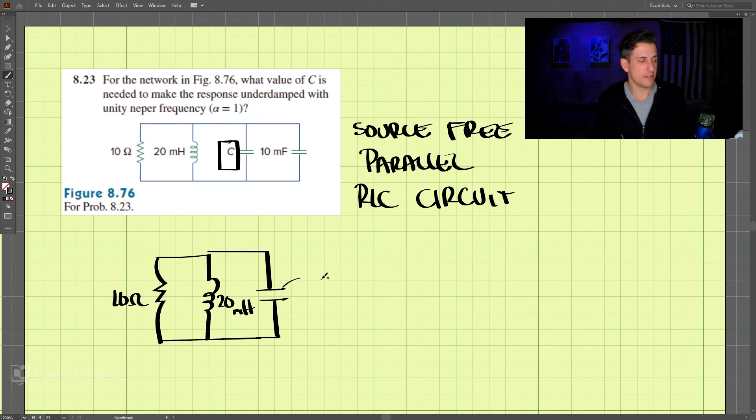And this is the equivalent capacitance where we need to add these two together. So the equivalent, and these are in parallel. So remember, adding capacitors in parallel is like adding resistors in series. So this is C plus 10 times 10 to the negative third farads.